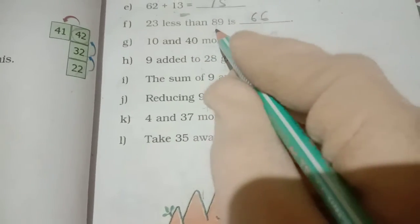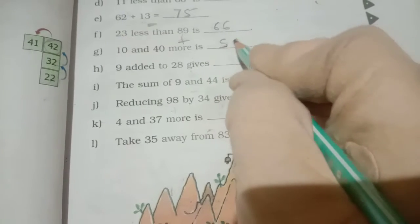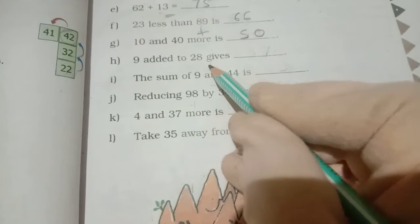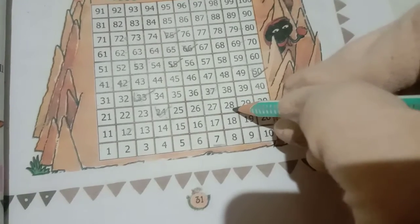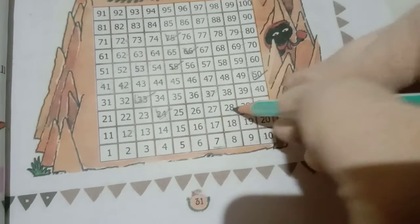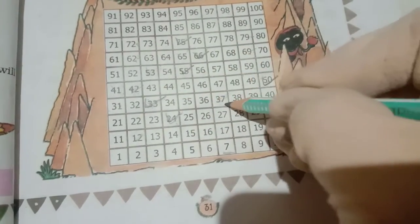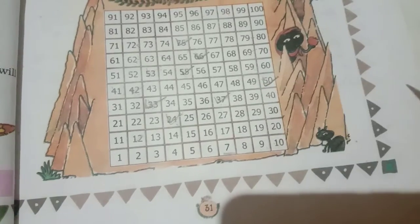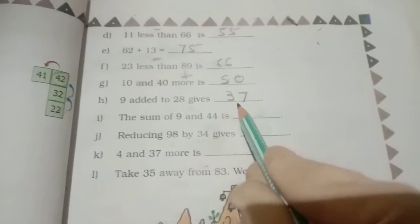Now 10 and 40 more. More means plus. 40 we add 10 means 50. Answer will get 50. Now next is 9 added to 28. So 28 we add 9. We go 9 steps. 1, 2, 3, 4, 5, 6, 7, 8, 9. So answer will get 37. So write in here number 37.